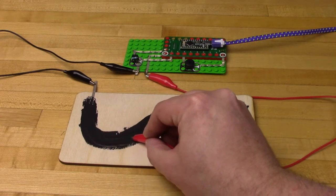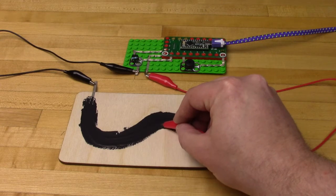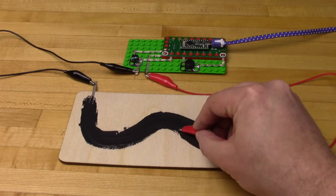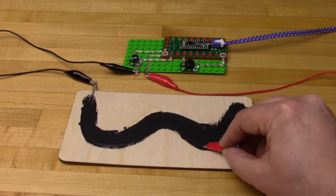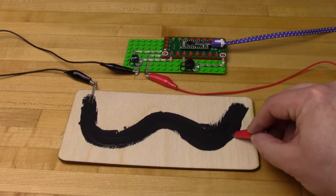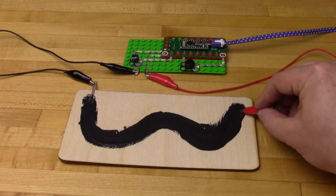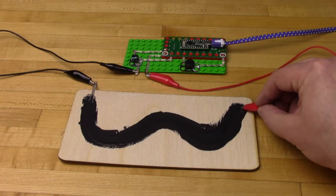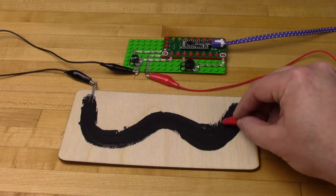Once your paint is dry, hook up one alligator clip to the conductive tape on your painting surface and use the other alligator clip as a probe to move along there. The further away you are from the beginning of your paint line, the more resistance there is and our code notices that and it changes the sound effects accordingly.